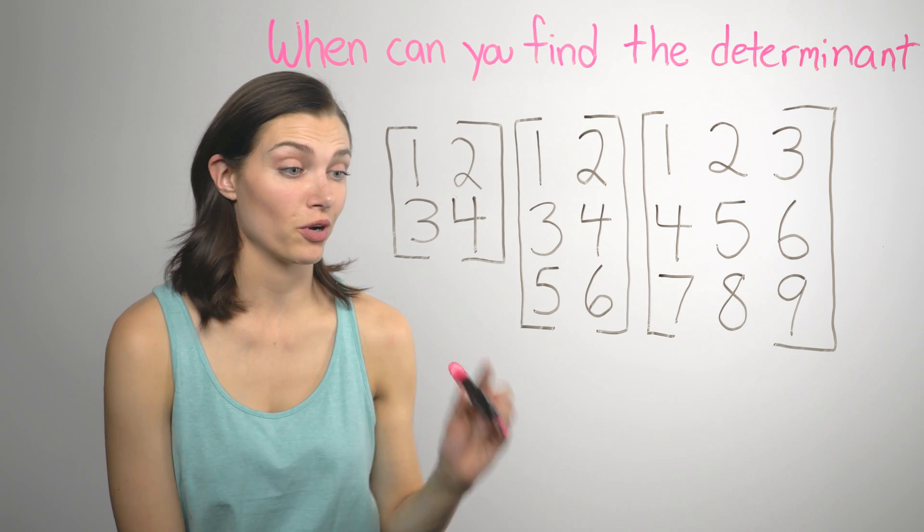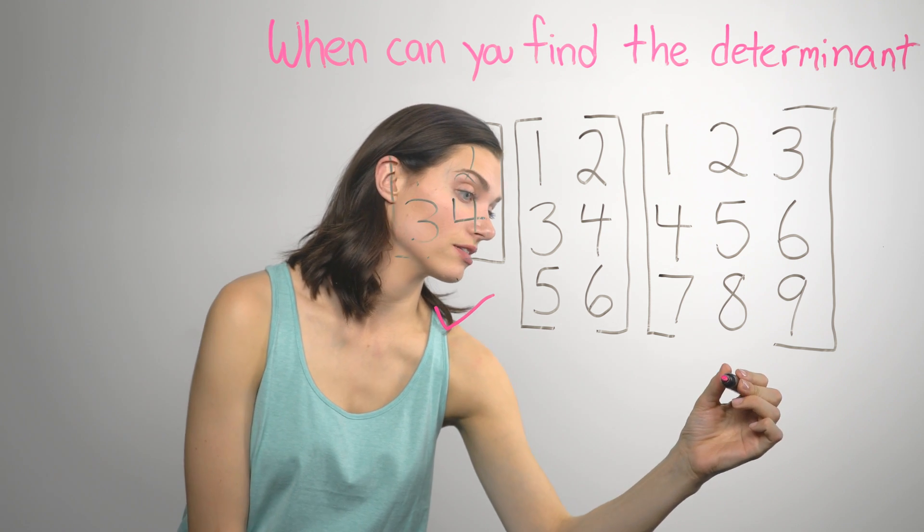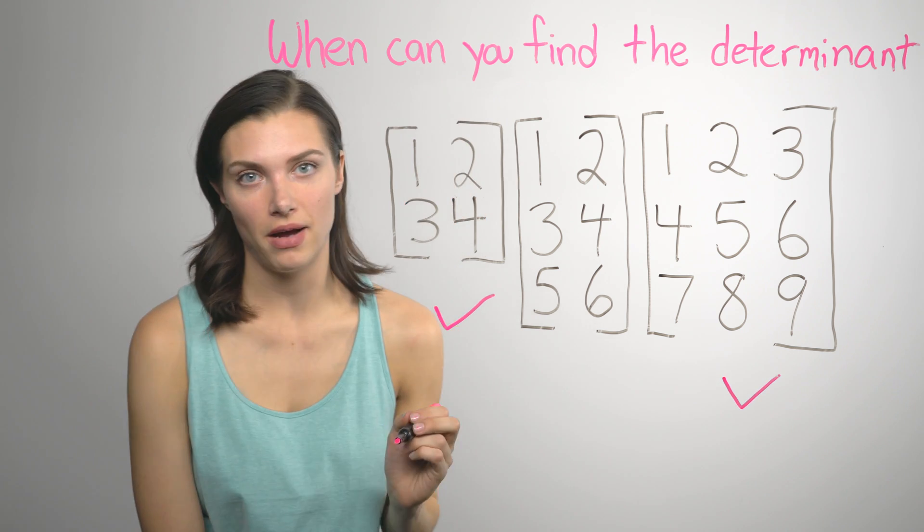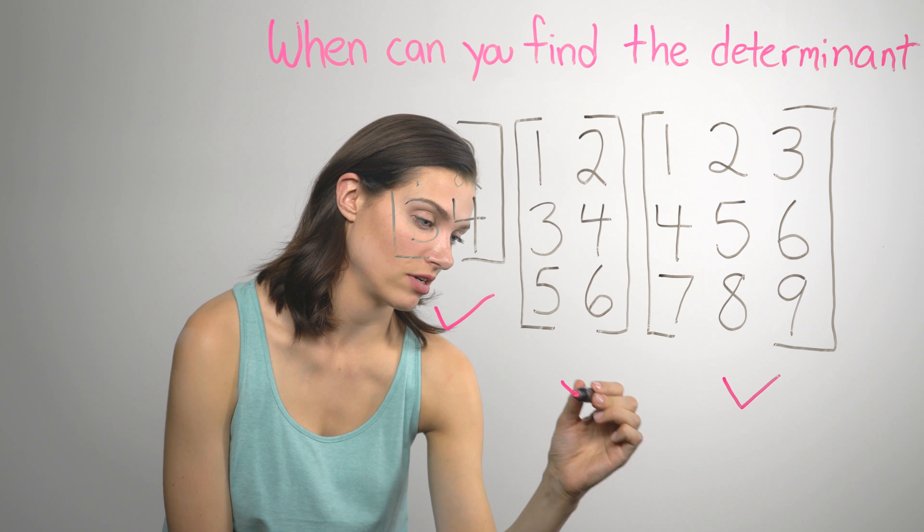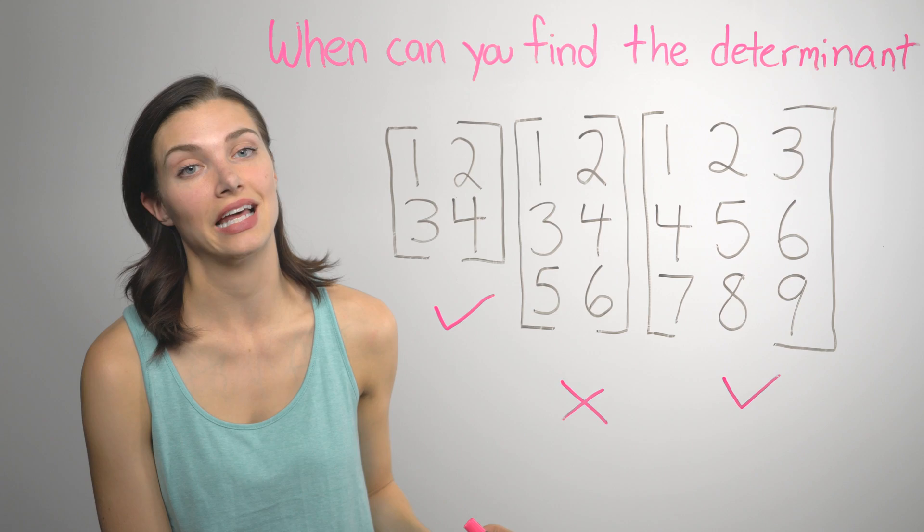So you can find the determinant for a 2x2 matrix, and a 3x3 matrix, but not for a 2x3 matrix. Squares are better anyway. They make things a lot easier, and I like easy.